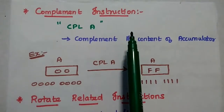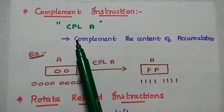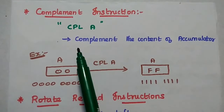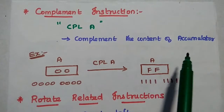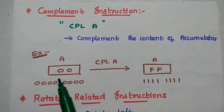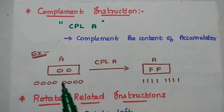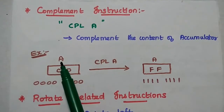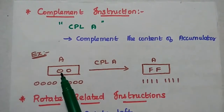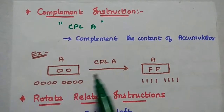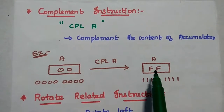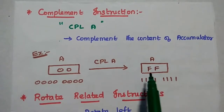The complement instruction is represented as CPL A. It is used to complement the content of the accumulator — ones complement, so 0 becomes 1 and 1 becomes 0. For example, if A is holding the data 00, then after executing the complement instruction we get the value FF.